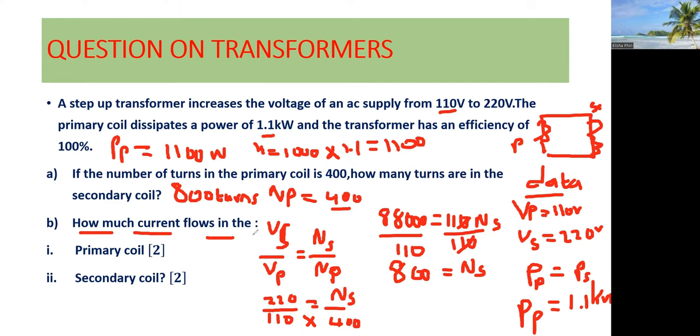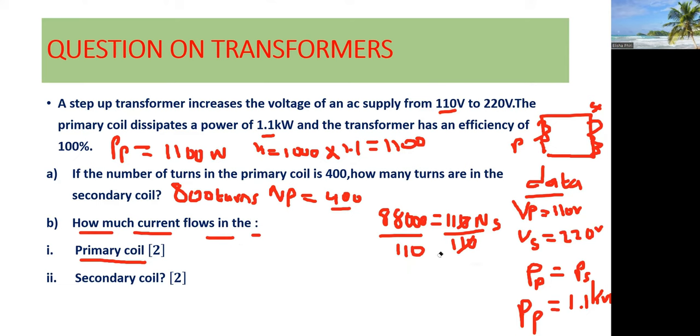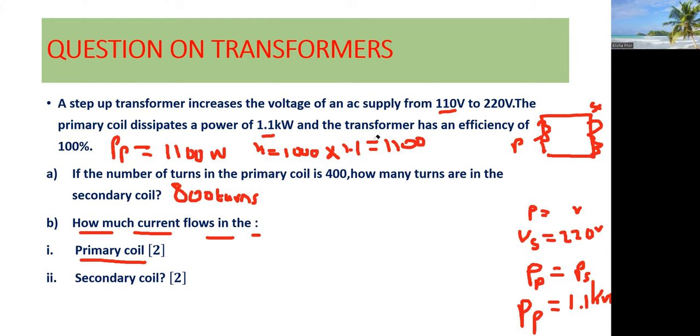They're saying how much current flows in the primary coil. You need to know that power is actually given by voltage times current. So now we are focusing on the primary coil. We want to determine how much current is flowing in the primary coil. So when you look at what we had collected, primary power is equal to 1,100. So we can substitute the P with 1,100.